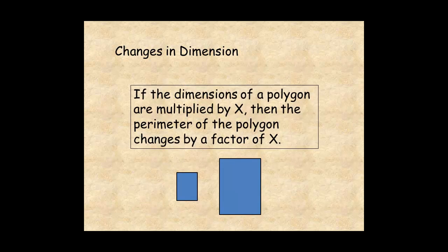In general, if the dimensions of a polygon are multiplied by x, then the perimeter of the polygon changes by a factor of x.